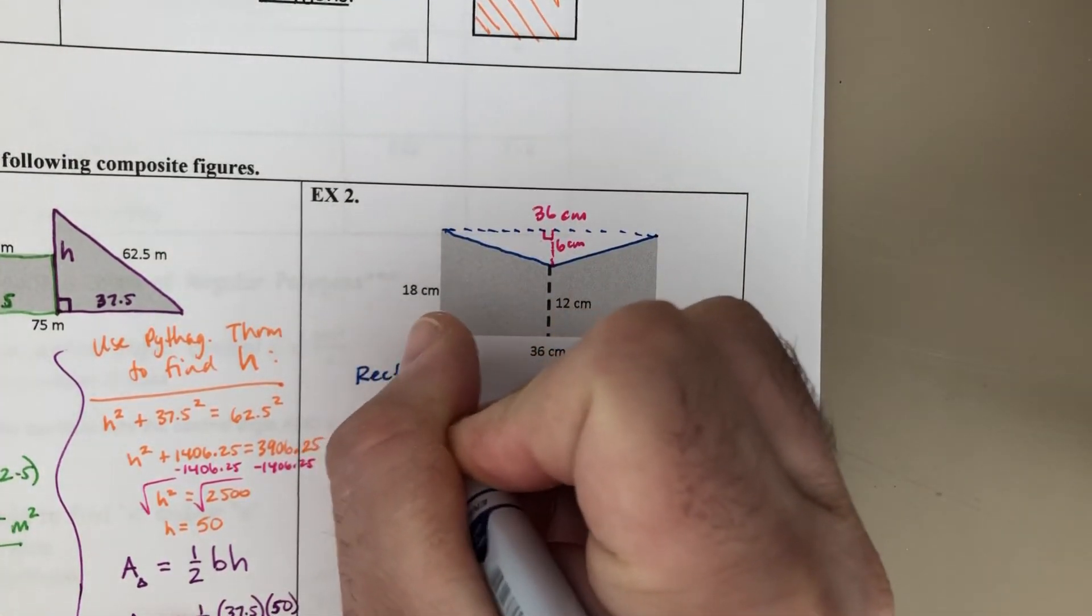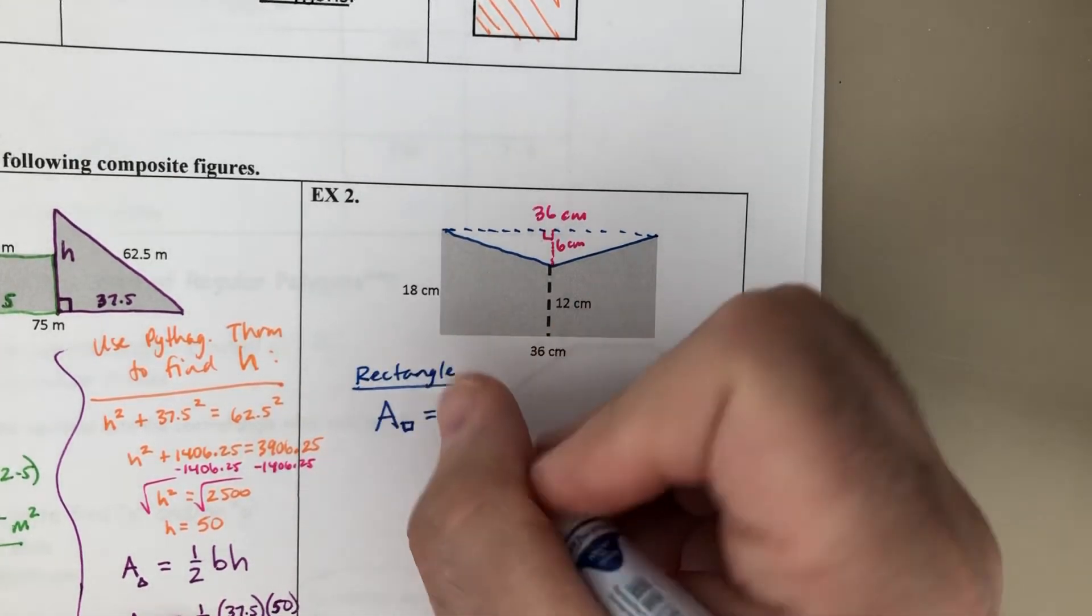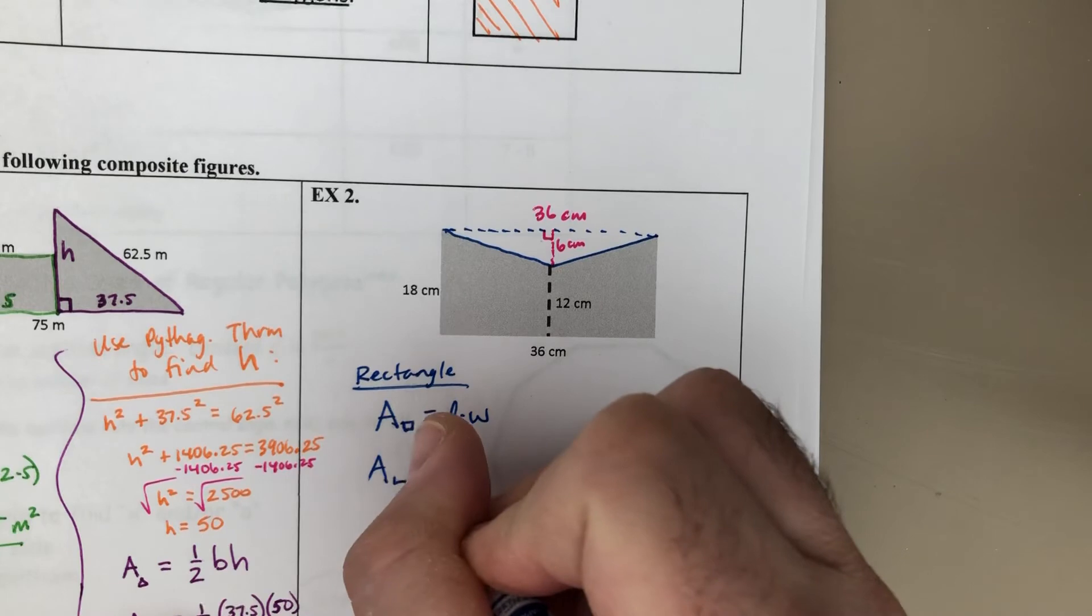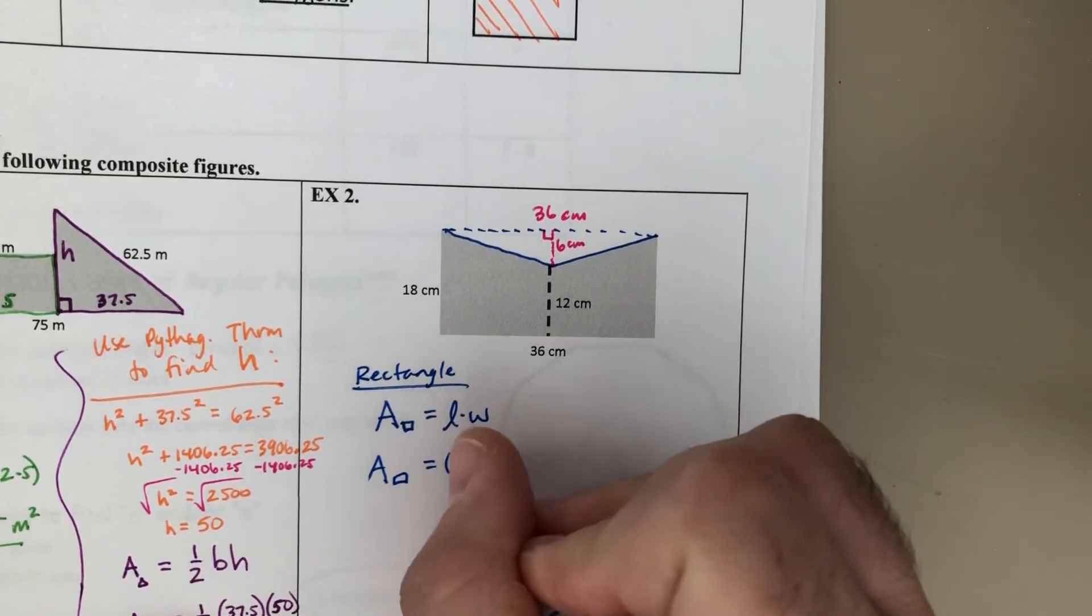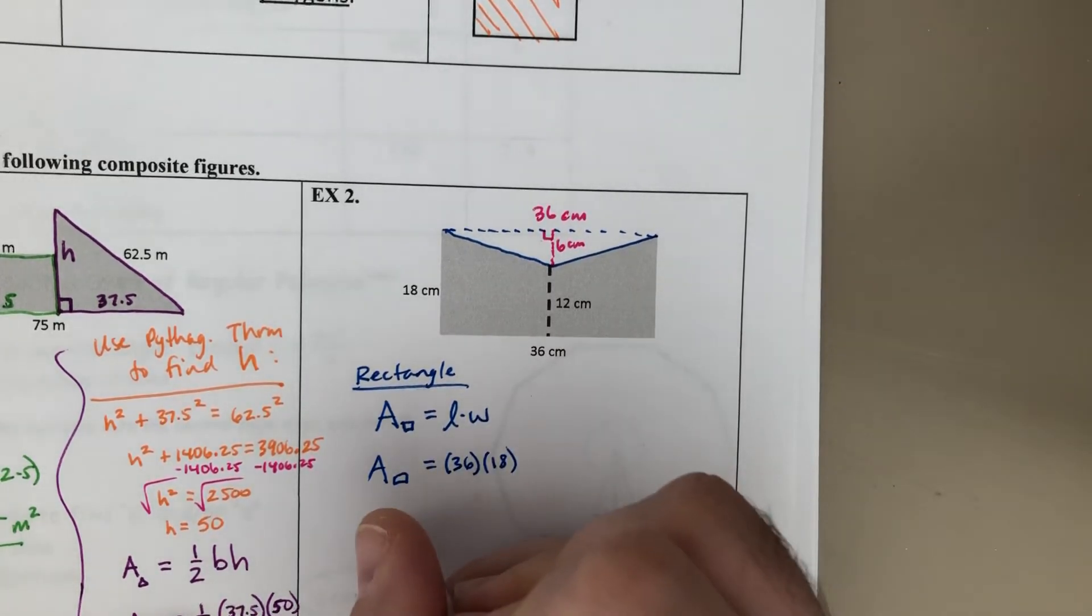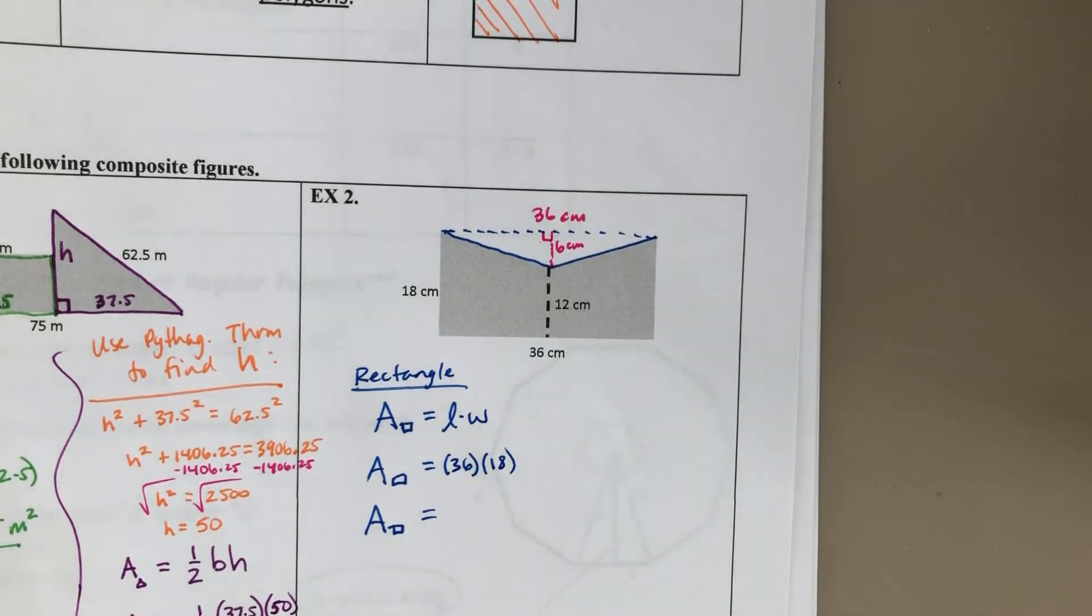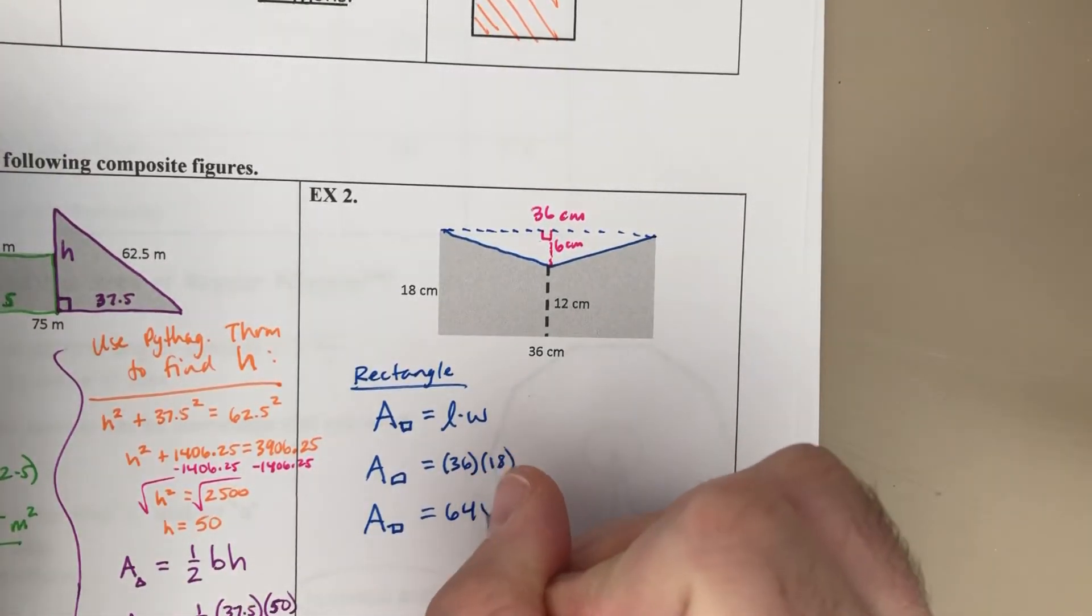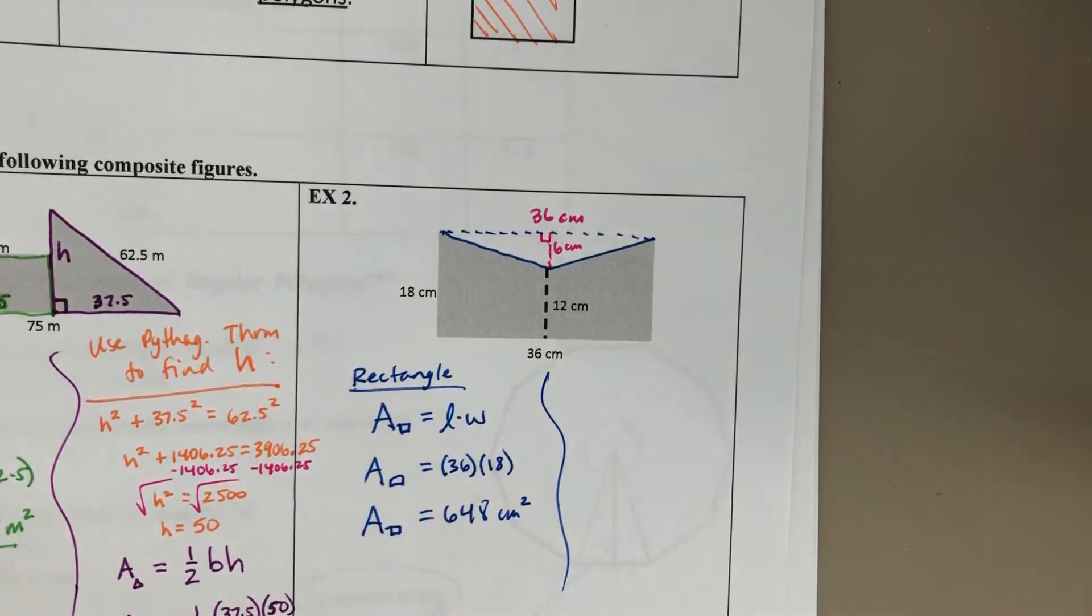So again, if we find the area of the rectangle, that's going to be the length times the width, which we have the 18 and the 36. So 36 is length times the width of 18. All right, so 36 times 18 is, let me get my calculator here. 648. This would be square centimeters. So there's the area for the rectangle.